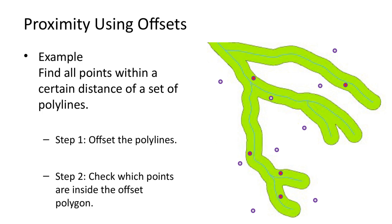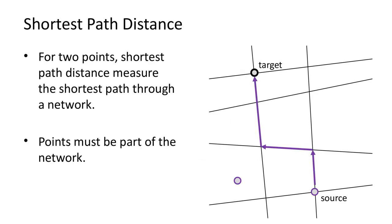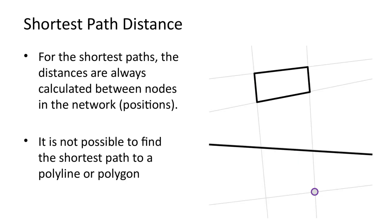Next we will look at proximity analysis using shortest path analysis. For two points, the shortest path distance measures the shortest path through a network. Remember that the path length is the sum of the weights of the edges. For the shortest paths, the source and target must be nodes in the network. It is not possible to find the shortest path to a polyline or polygon, but it is possible to find the shortest path to all the positions that make up the polyline or polygon.